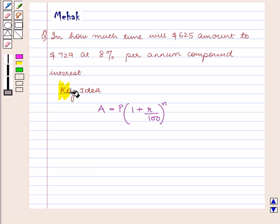With this key idea, let us proceed with the solution. According to the question, we need to find the time in which $625 amounts to $729 at 8% per annum.